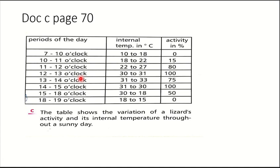Also from this document, try to explain why the lizard's activity decreases at 13 to 14 o'clock. The lizard's activity decreases because its internal temperature rises above 31 degrees Celsius, so the lizard will decrease its activity in order to decrease its internal temperature.